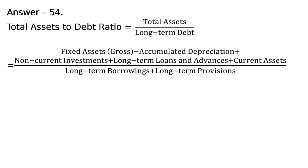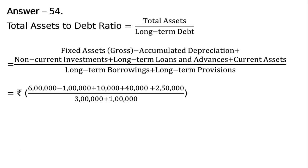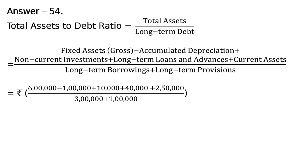Then we proceed with the calculation. That is, Rs. 6 lakh minus Rs. 1 lakh, plus Rs. 10,000, plus Rs. 40,000, plus Rs. 2 lakh 50,000 — whole divided by Rs. 3 lakh plus Rs. 1 lakh — that is equal to Rs. 8 lakh upon Rs. 4 lakh, which is 2 is to 1. This is the final answer.